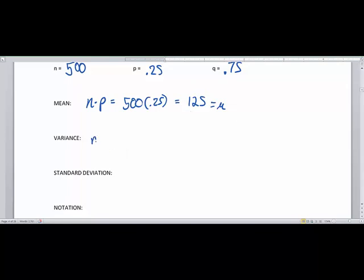Now the variance is going to be N times P times Q. And N times P times Q is going to be the 500 times the .25 times the .75. And if you multiply all these together, you get 93.75 Xbox 360s. So this is going to be my variance, which is lowercase sigma squared.